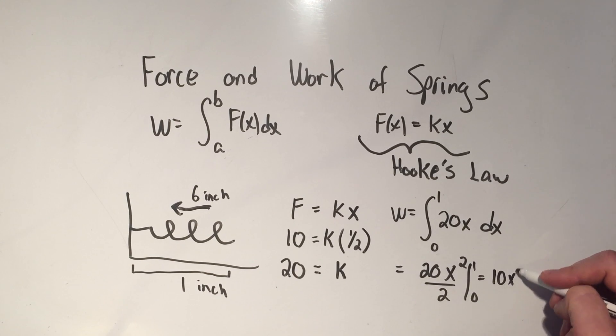And if I plug in one, one squared, if I plug in zero, that's zero squared. Zero times anything is zero. One times one is one. So the amount of work to do this would be 10.